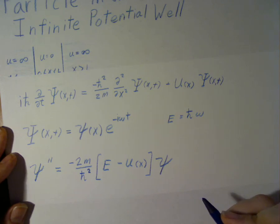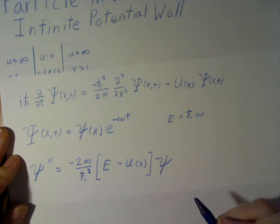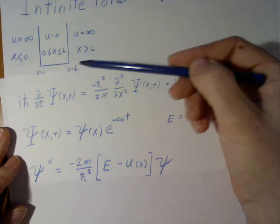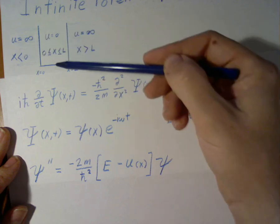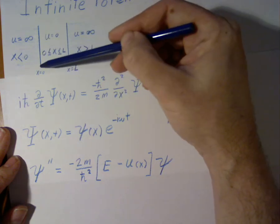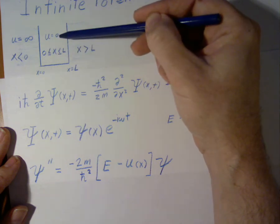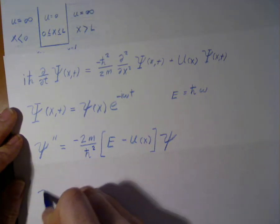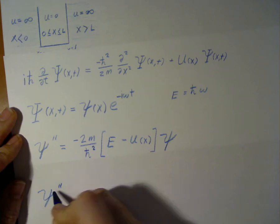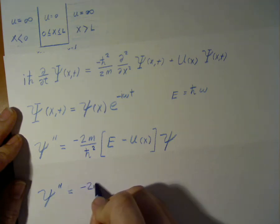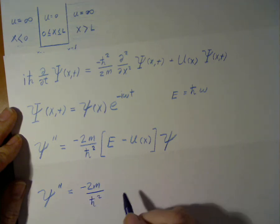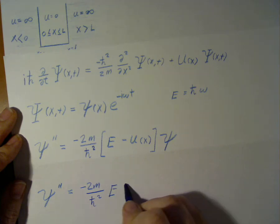The particle in a box is a useful example because of its great simplicity. Since the wave function is zero in the infinite region, there's no wave function here. But where we do have the wave function, our potential is zero. This means we can simplify the equation by writing the second derivative of the wave function equals negative 2m over h-bar squared times E times psi.